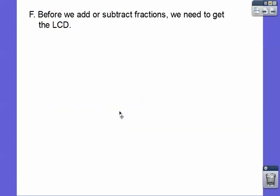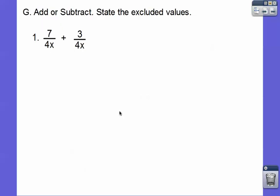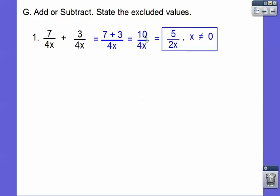Before we add or subtract fractions, we have to get the lowest common denominator. Let's add or subtract and state the excluded values — those are the x values that give us 0 in the denominator. Here I can't have x equal 0, because that gives 4 times 0 which is 0. So our excluded value is x can't be 0. We already have common denominators, so let's go 7 plus 3 all over 4x, which is 10 over 4x. I can cancel because there's a multiply sign — 2 goes into 10 five times and into 4 twice — so I get 5 over 2x.